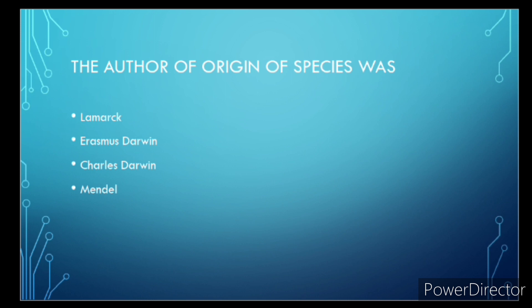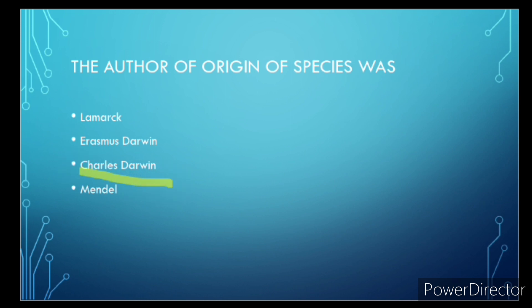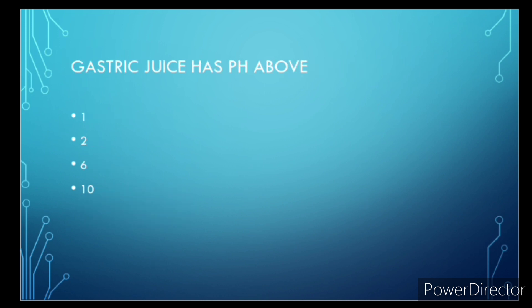The author of Origin of Species was? The correct answer is Charles Darwin. Kanha National Park is located in? The correct answer is Madhya Pradesh.